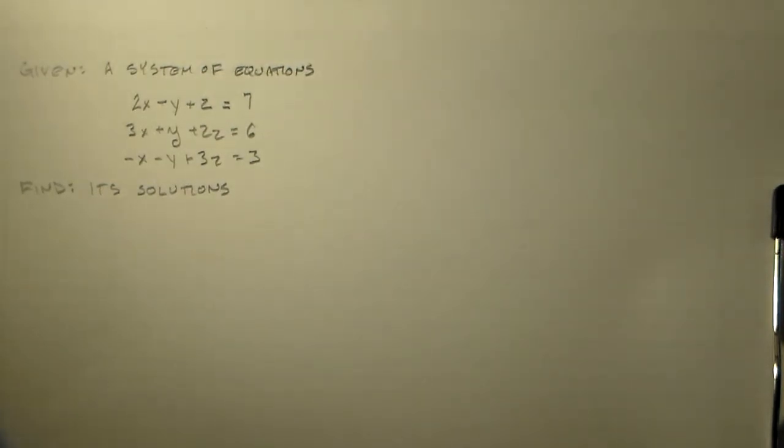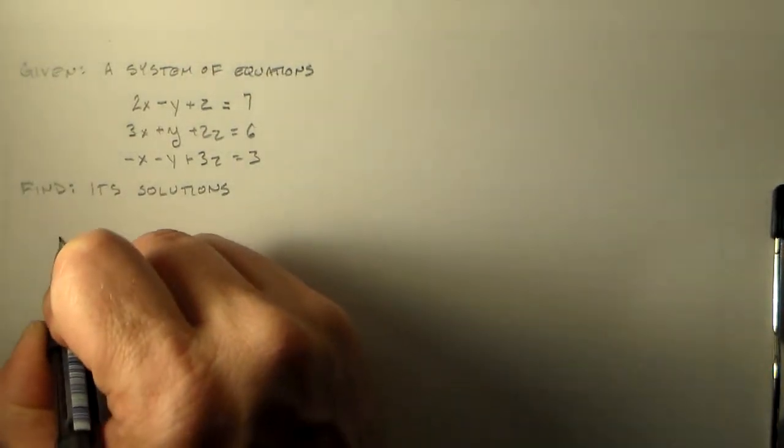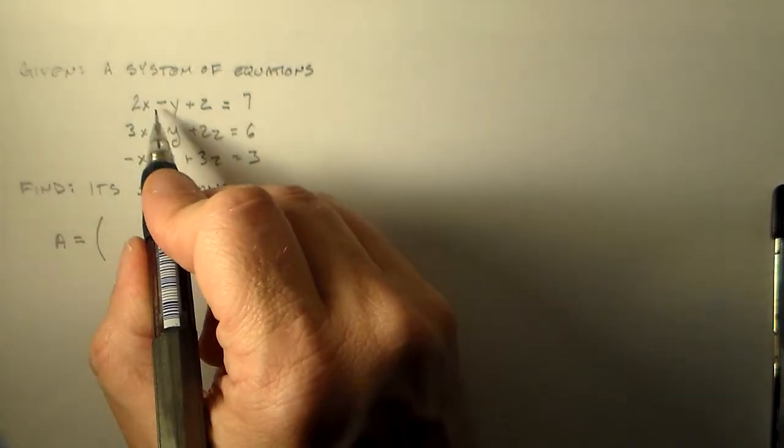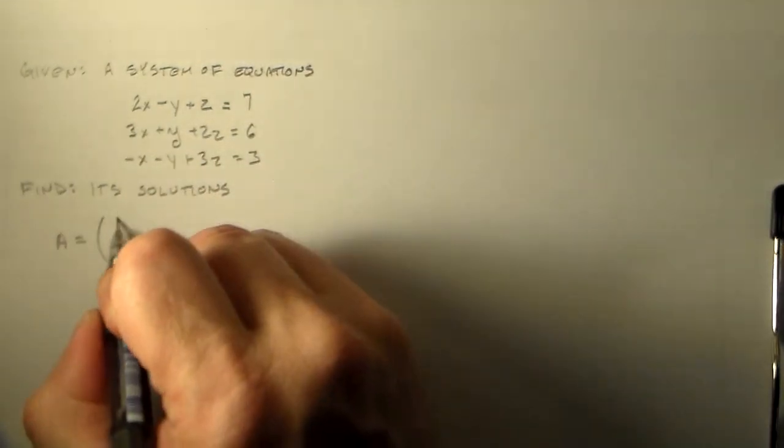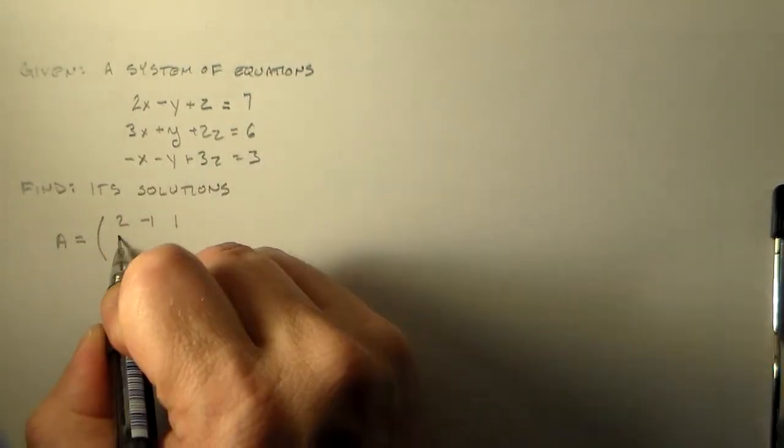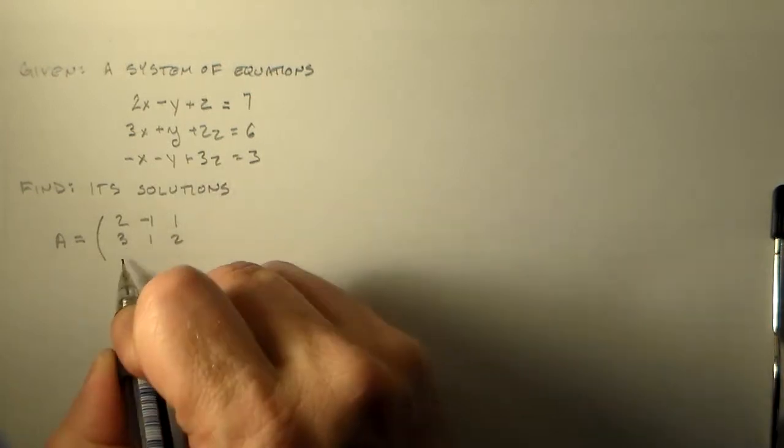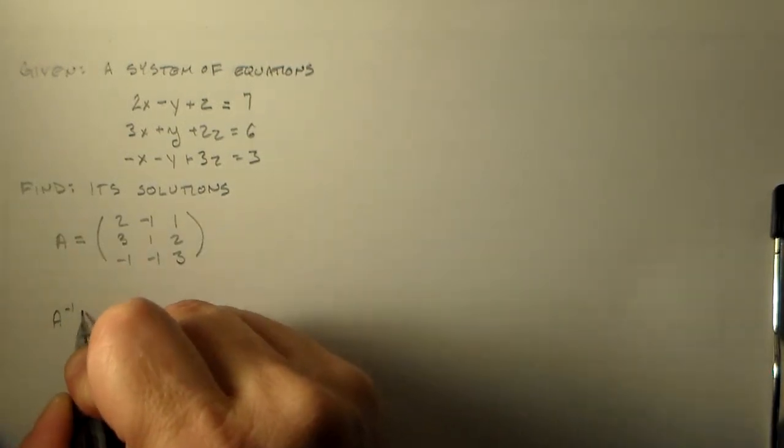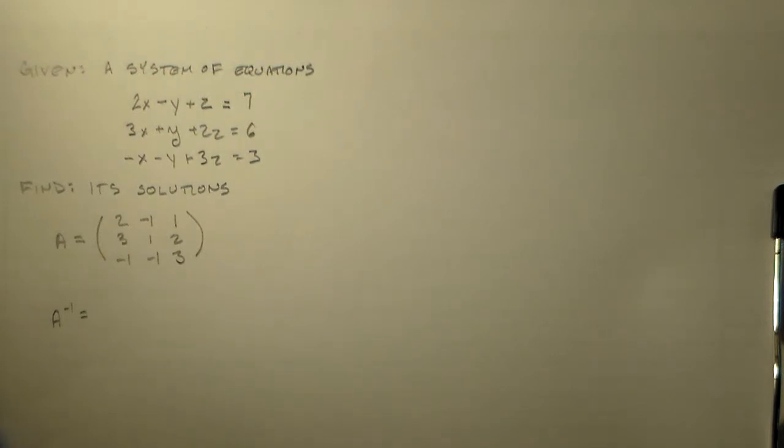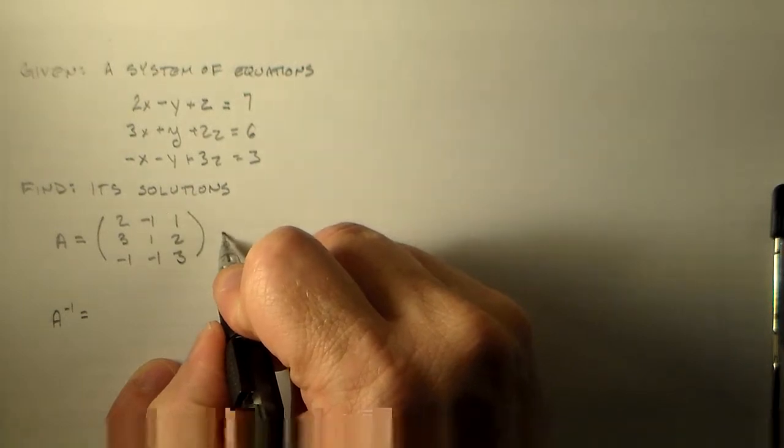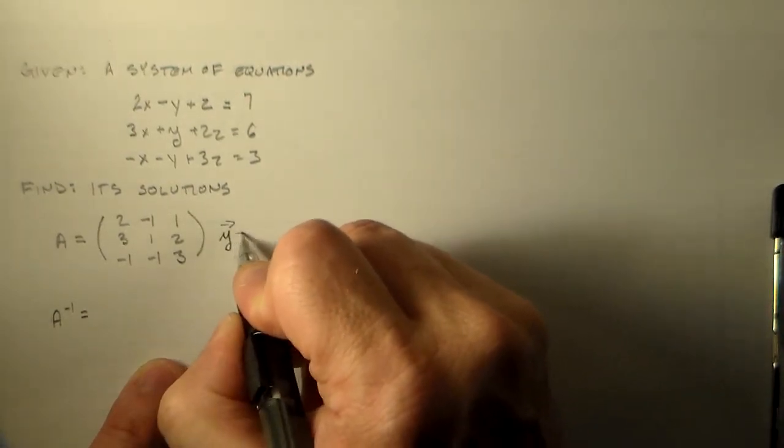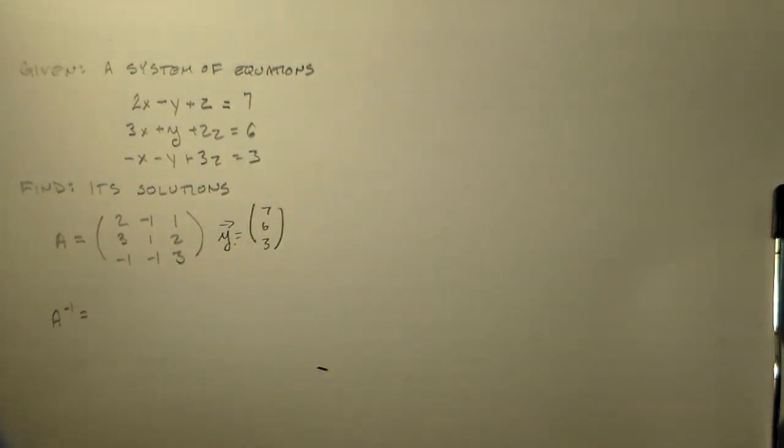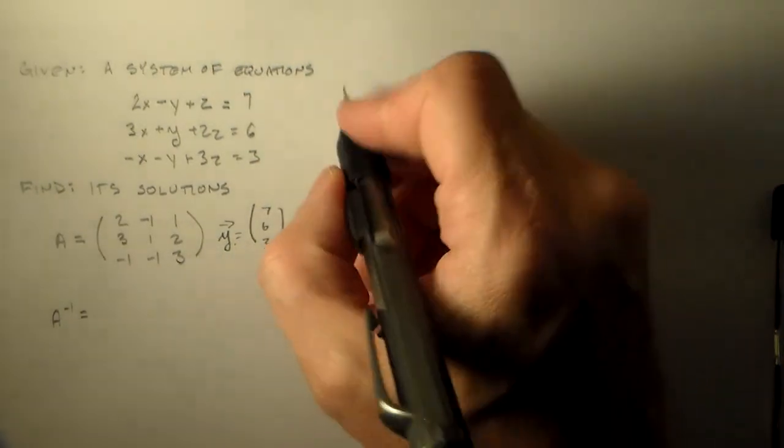Find the solution of the system of equations. That seems perfectly reasonable to me. That's the sort of thing we like to do. So when we do this, we say, okay, I'd like to make this into a matrix A. And that matrix is 2 minus 1, 1; 3, 1, 2; minus 1, minus 1, 3. And then I want to be able to take that and find the inverse matrix. Then I'll multiply that by this row vector here. Let's call it y: 7, 6, 3. So we find this A inverse multiplied by that and we should have our solutions.